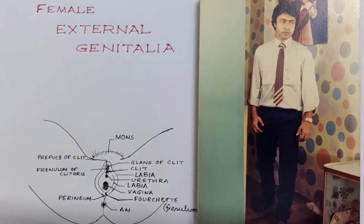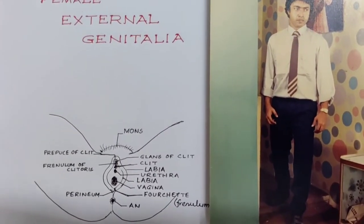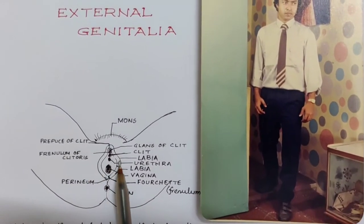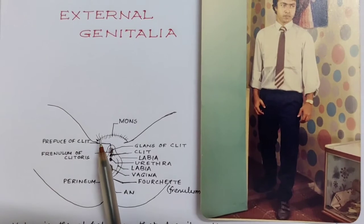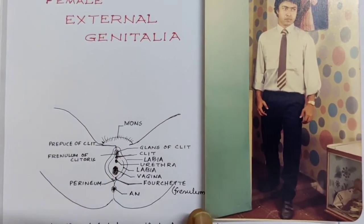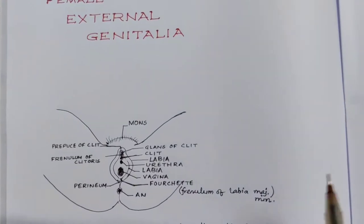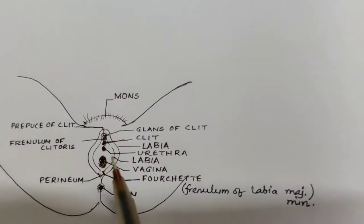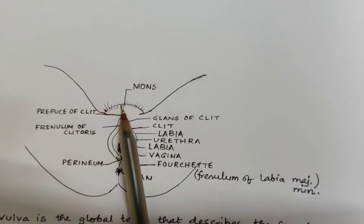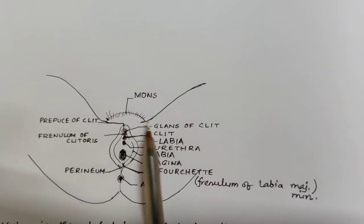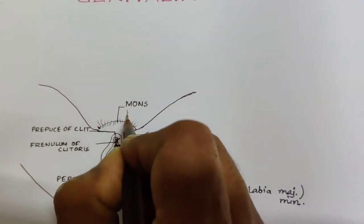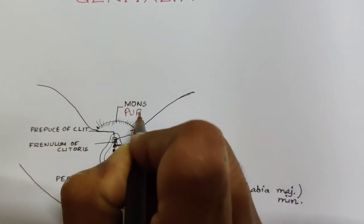So here we start. As you see the structure over here — this is the structure. External genitalia means vulva. Now this part is a fatty sheath called Mons pubis.